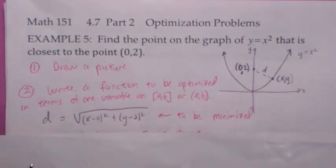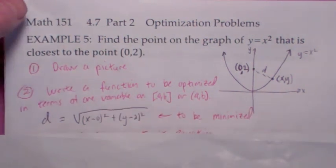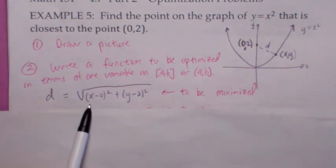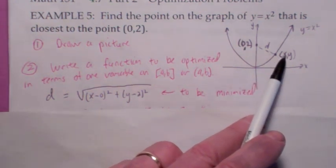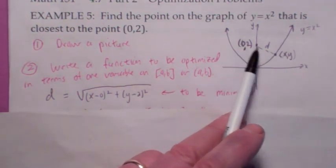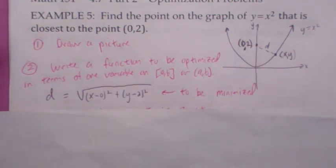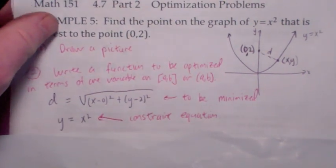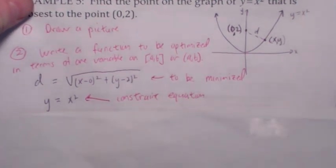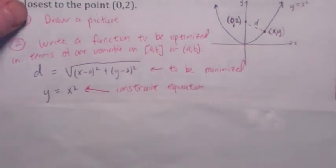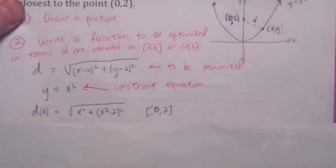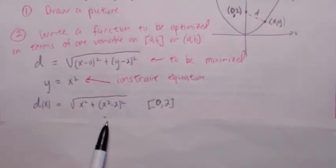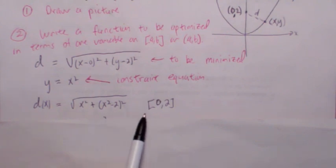The function that's going to be optimized — in this case minimized — is the distance function: the square root of (x minus 0) squared plus (y minus 2) squared. The constraint equation becomes the function itself, y equals x squared. So when you plug in x squared for y, you get this.